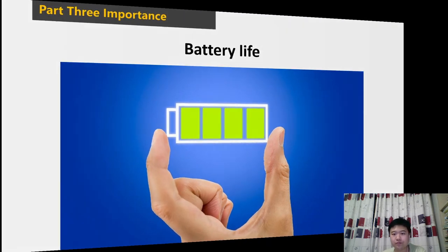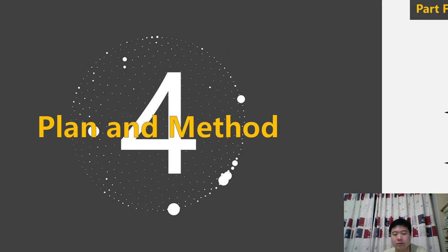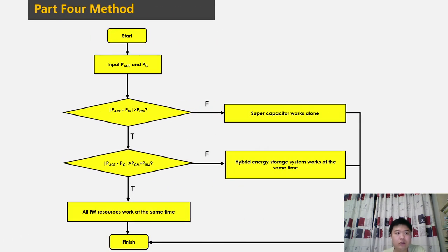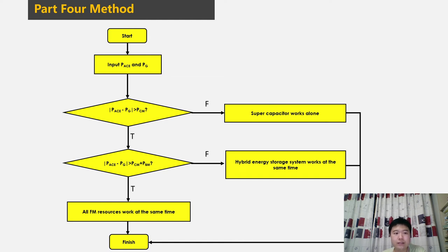Then let's talk about the plan. The approach of this research is to develop a mathematical model for the optimization of energy storage capacity and to propose an optimal distribution scheme by multiple simulations of the area control error model, followed by the addition of energy storage batteries to the automatic generation control system. This approach benefits by improving frequency modulation performance and economy, increasing battery life, and improving the utilization of super capacitors.